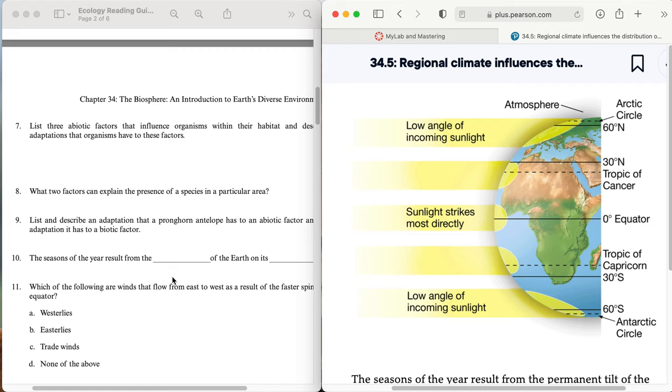It is 23.5. Kind of noteworthy to write down. It's on question number 10. The seasons of the year result from the tilt of the earth on its axis. This 23.5 degree tilt on its axis. That's the answer to this question. The seasons of the year are because the earth is tilted at 23.5 degrees on its axis. So, it spins around. That's the day. But, it also goes around the sun. The sun doesn't go around us.